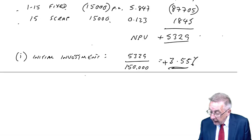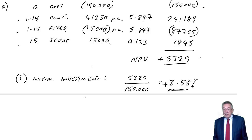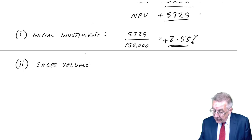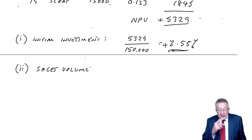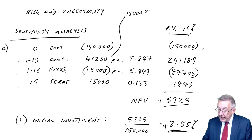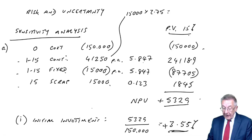Now look at the second one: sales volume. We did this on the assumption we were going to sell 15,000 units a year, each generating a contribution of £2.75. Therefore we were expecting a contribution of £41,250 a year.